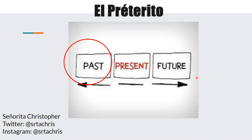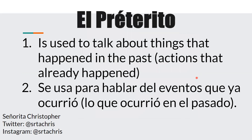You might be wondering, what does el pretérito mean? El pretérito is a verb tense that refers to things that happened in the past. If we were to have a timeline of events, we have our past, our present, and our future. Our present is what's happening right now, our future is something that's going to happen, and right now we're talking about what already happened. Se usa para hablar de los eventos que ya ocurrió — lo que ocurrió en el pasado.